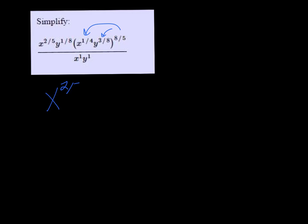So we have x to the two-fifths, y to the eighth, times x to the 8 over 20. It's not simplified, but don't worry about that just yet. And then y to the 24 over 40.